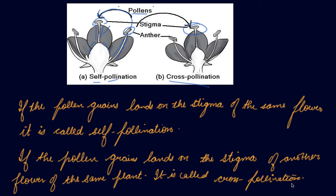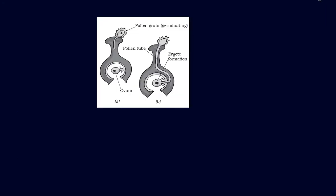Now let's understand what happens after pollination takes place. When the pollen grain reaches the stigma of the female reproductive part, it travels through the style to the ovary and gets attached to the ovule. When it gets attached to the ovule, the male gamete and female gamete join together and form the zygote.